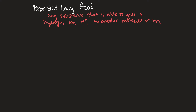A Bronsted-Lowry acid is any substance that is able to give up a hydrogen ion (H+) to another molecule or ion. A hydrogen atom consists of a proton and an electron, whereas a hydrogen ion is just a proton — so it's essentially a proton transfer. This is why a Bronsted-Lowry acid is called a proton donor.